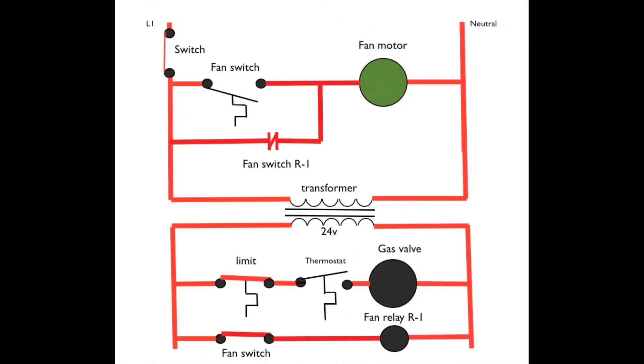In this one, we have closed this manual fan switch down here, which the power is passed through an energized fan relay R1. When fan relay R1 is energized, then fan switch R1 is closed. Notice I've closed these contacts. Then the power passes through here and up to energize the fan motor.